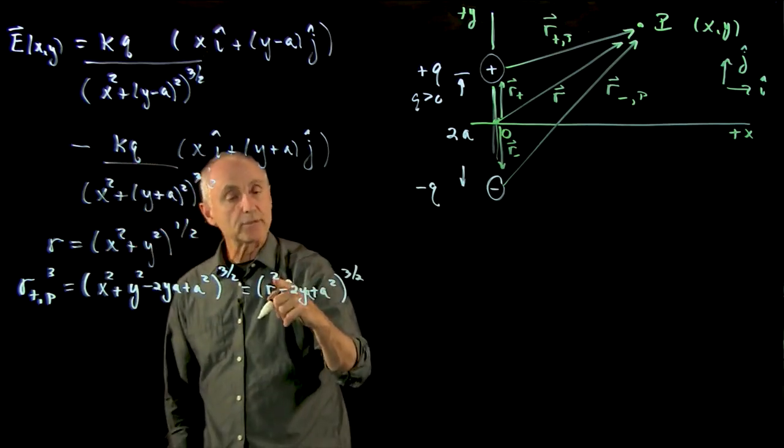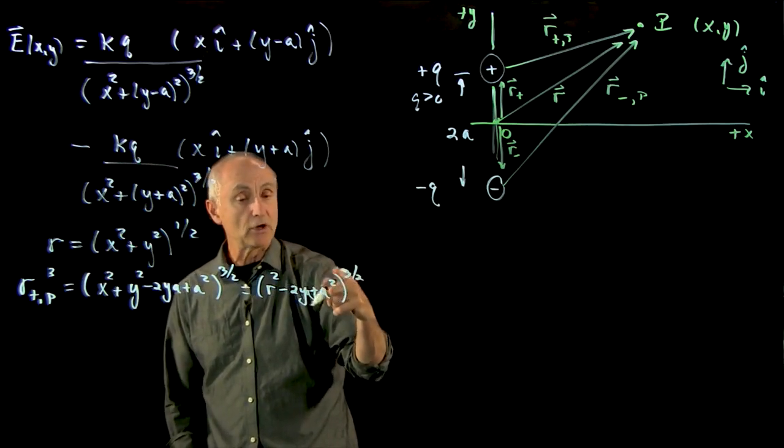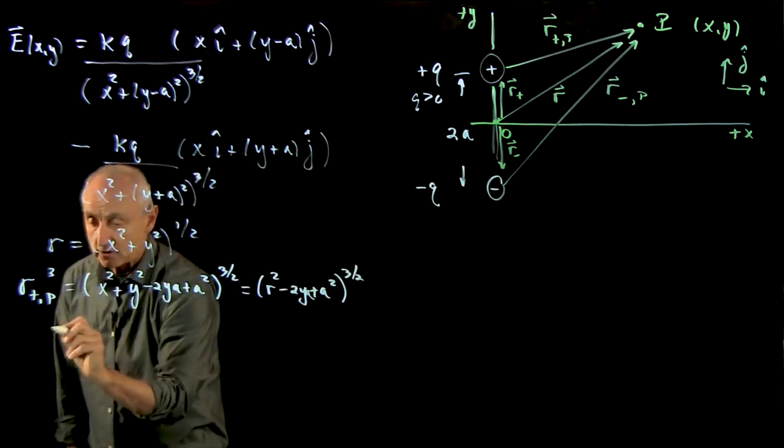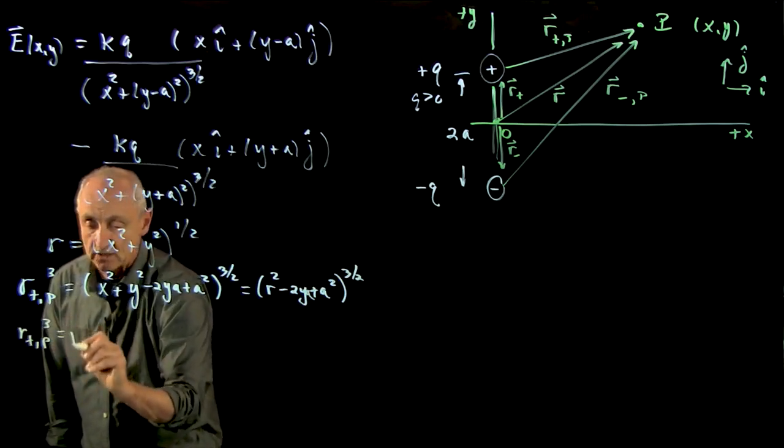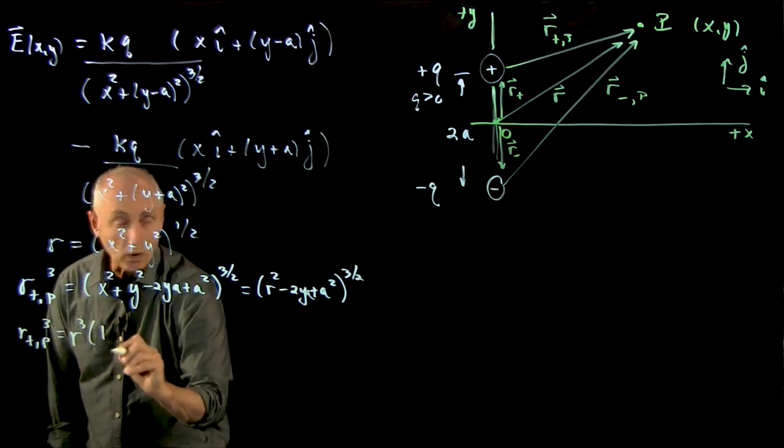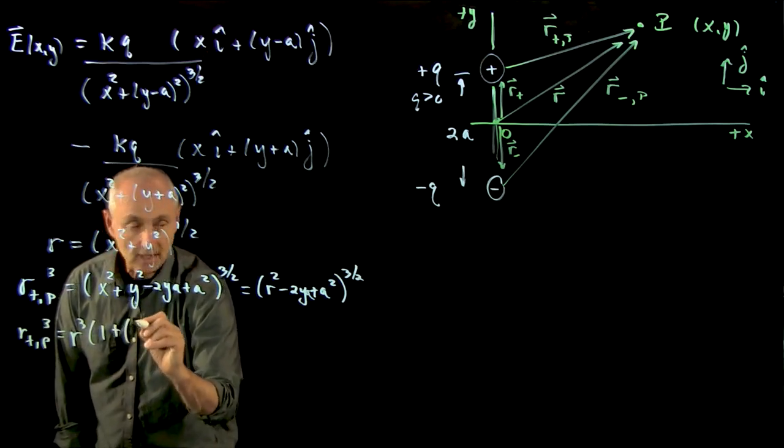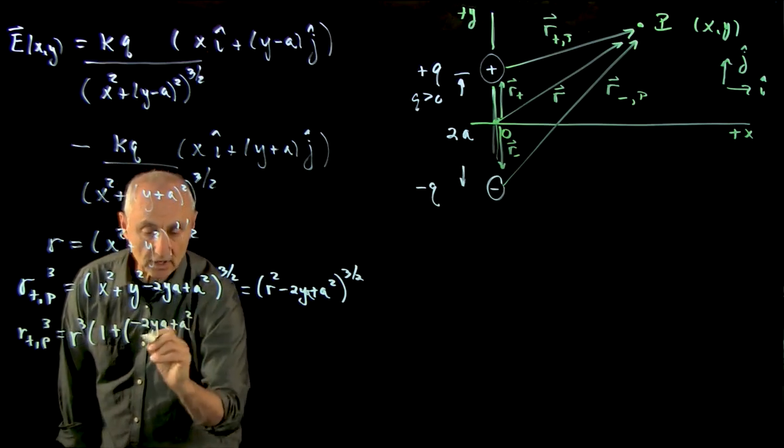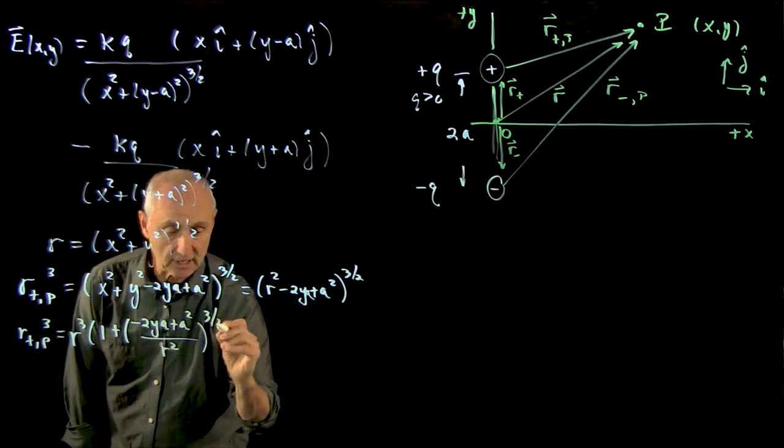This is a little bit complicated, because you're taking an r squared out of something that's to the 3 halves power. So first you'll take the square root, r, and then cube it. And so we get that r_plus_p cubed is r cubed times 1 minus, well, let's do plus, minus the quantity 2ya plus a squared over r squared, all to the 3 halves power.